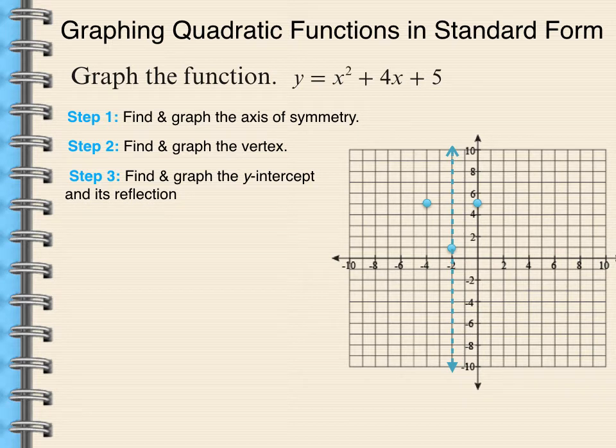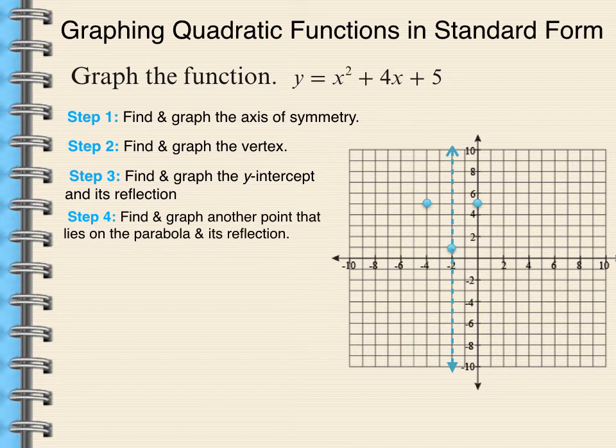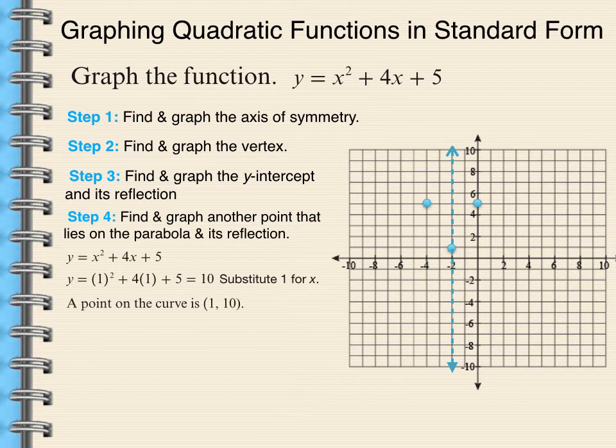Next thing I want to do is to find and graph another point that lies on the parabola along with its reflection. So it's a good idea to substitute maybe the number 1 in for x because that seems to be convenient, if I put a positive 1 into x, everything will be positive. So let's figure out what is the y-value when x equals 1. That's going to be 1 comma 10. So I plot that point, and then I plot the reflection of that point.